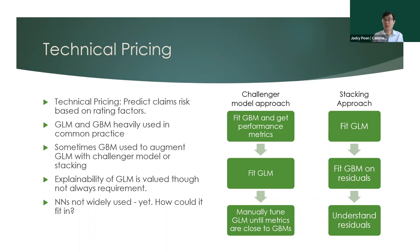Living in certain areas makes your car more likely to be stolen, or you might be susceptible to hail risk depending on where you are in Australia. All of that goes into technical pricing. Within the industry at the moment, the most popular models are the GLM and the GBM. One approach is to just use a GLM — that's the traditional way of doing things, and still quite popular in a lot of companies.